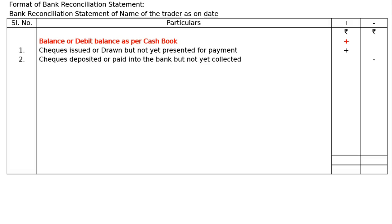Second item: checks deposited or paid into the bank but not yet collected. Checks paid into the bank increase the cash book balance, but nothing happened in the bank — nothing was increased. Hence we have to deduct these amounts from the cash book balance to find out the correct passbook balance.